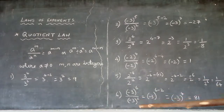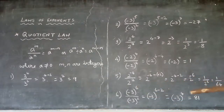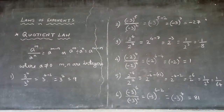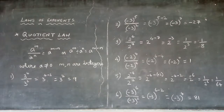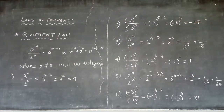Example 6: (-3)⁶ divided by (-3)². Same base, so write the base and subtract the exponents: 6 minus 2 = 4. So the result is (-3)⁴. Since the base is a negative number and the power is even, the answer is positive. So (-3)⁴ = +3⁴ = 81. Shortcut: negative number with even power → positive result; negative number with odd power → negative result.